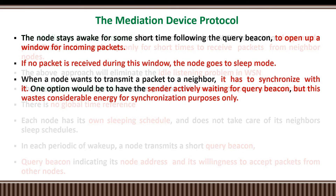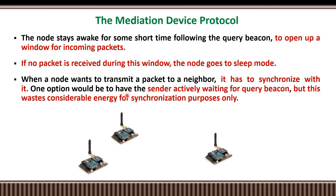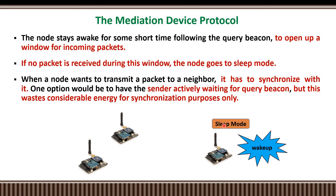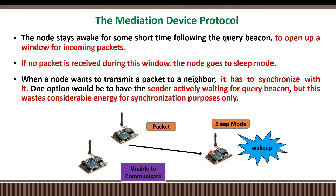In a scenario with three nodes: when one node is in wake-up condition, it immediately transmits a query beacon to nearby nodes within its coverage area. It then waits — opening a window — to receive packets from other nodes. If no packets are received, it immediately moves to sleep mode. During this sleep mode, if some other node tries to transmit a packet to this node, it will not be accepted. This creates a problem: we must synchronize the transmitter and receiver, otherwise no packet will be delivered.